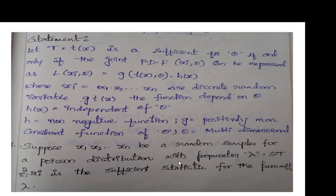We have two solved problems. Problem one: suppose X1, X2, up to Xn be random samples from a Poisson distribution with parameter lambda. Show that summation Xi is the sufficient statistic for the parameter lambda. We have the Poisson distribution with parameter lambda, and we need to show that summation Xi is the sufficient statistic.